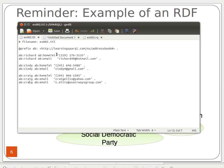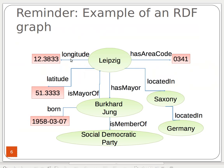Every collection of triples can be represented as a graph — it actually is a graph. That's why some people call it an RDF graph. So 'RDF graph' and 'RDF data set' are exactly the same thing.